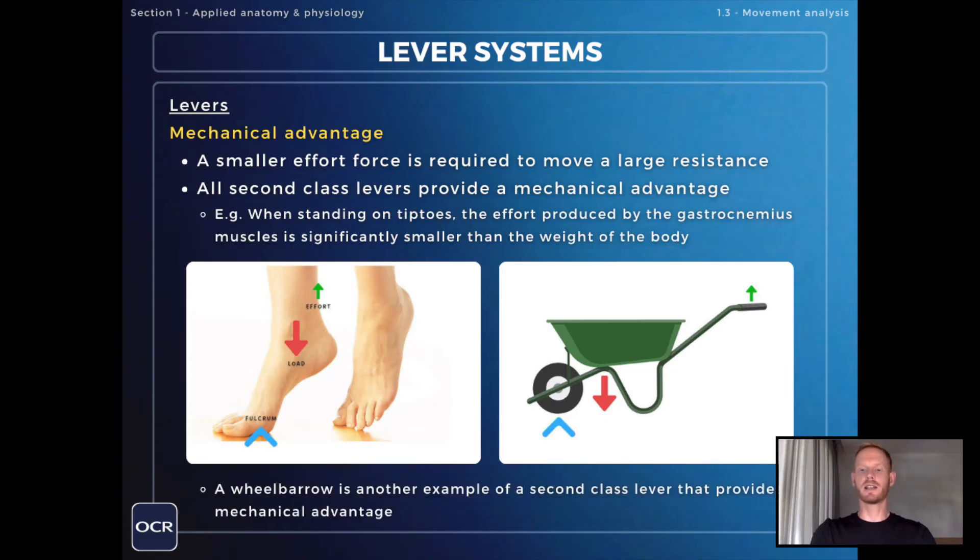An easy way of understanding the effects of mechanical advantage with second-class levers is to think of a wheelbarrow. The effort required to lift the wheelbarrow is significantly less than the weight of the objects contained within it.